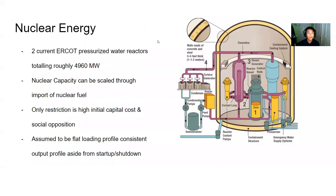Hi, my name is Victor Nguyen, and I'll be discussing nuclear energy. Nuclear energy is derived from fission reactions of radioactive materials — in particular, uranium fuel rods are typically used. The reaction produces heat, which turns water into steam and drives a steam generator. The ERCOT region is characterized as having pressurized water reactors, which have two dual cycles: one cycle has water running through the core to heat up, and another runs through the steam generator so radioactive materials cannot contaminate the steam.